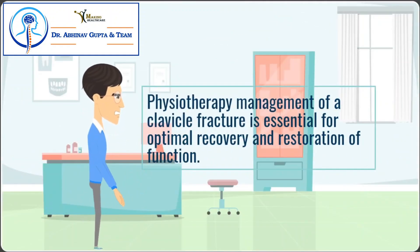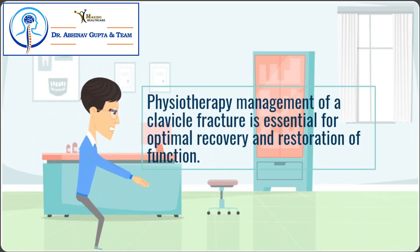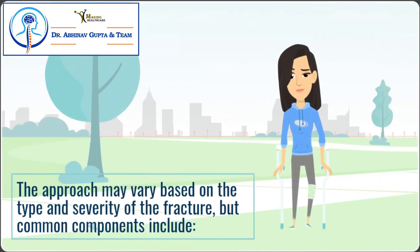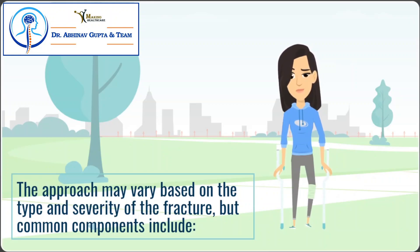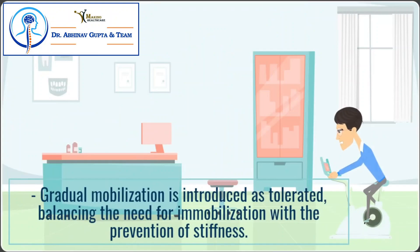Physiotherapy management of a clavicle fracture is essential for optimal recovery and restoration of function. The approach may vary based on the type and severity of the fracture, but common components include immobilization and support. Initially, the affected arm may be supported using a sling to minimize movement and reduce pain. Gradual mobilization is introduced as tolerated, balancing the need for immobilization with the prevention of stiffness.